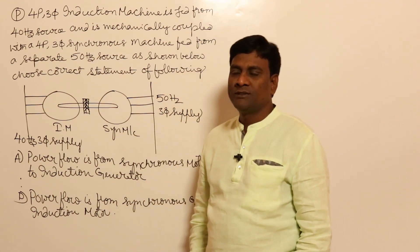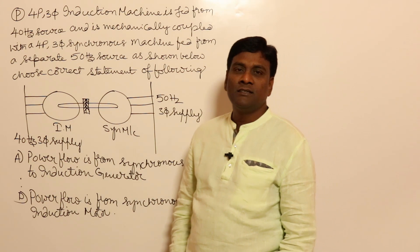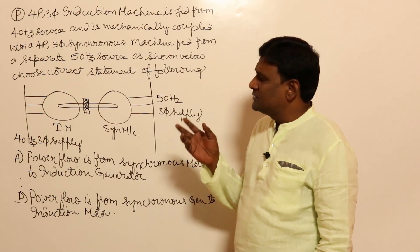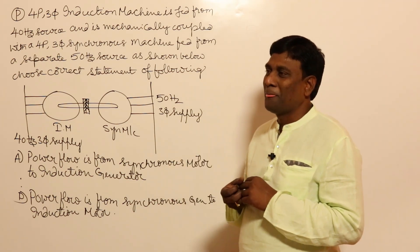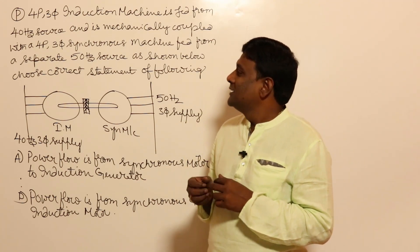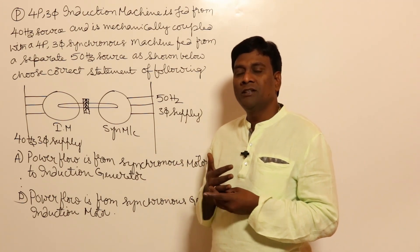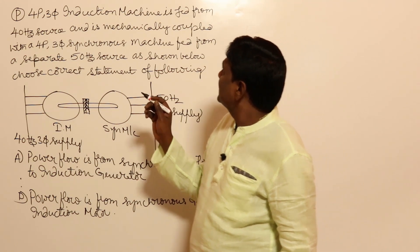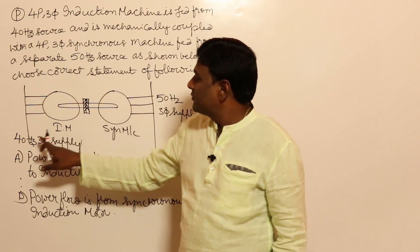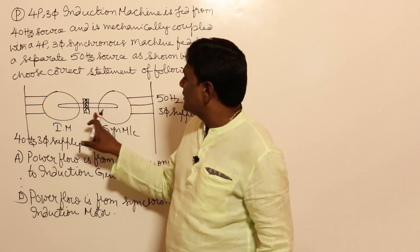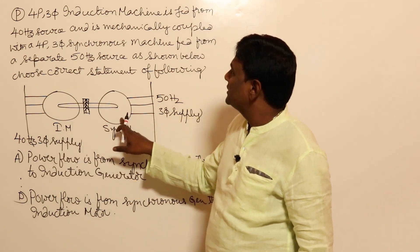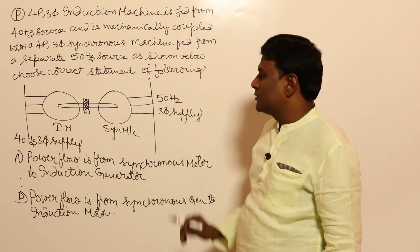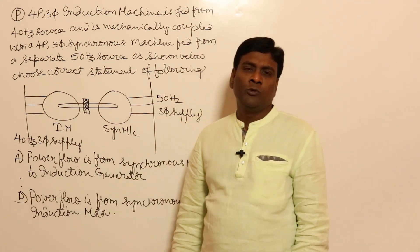Let us see one problem from the random doubt section sent by Rajashinath Benerji. It was given in an online test and felt like a very easy question. A four-pole three-phase induction machine fed from a 40Hz source is mechanically coupled with a four-pole three-phase synchronous machine fed from a 50Hz source. Choose the correct option from ABCD — we can directly eliminate BC.